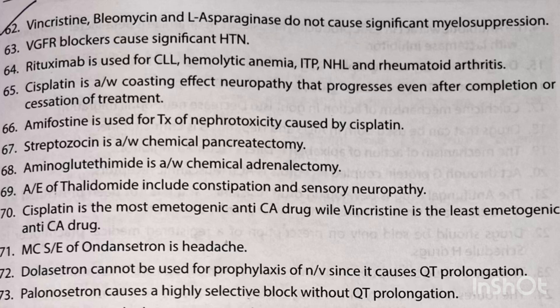Aminoglutethimide is associated with chemical adrenalectomy. Adverse effects of thalidomide include constipation and sensory neuropathy. Cisplatin is the most emetogenic anti-cancer drug, while vincristine is the least emetogenic anti-cancer drug. The most common side effect of ondansetron is headache. Dolasetron cannot be used for prophylaxis of nausea and vomiting since it causes QT prolongation. Palonosetron causes a highly selective block without QT prolongation.